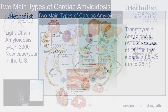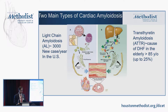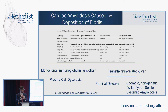Looking first at cardiac amyloidosis, there are two main types. One is light chain amyloidosis — a disease produced in the bone marrow — causing light chains to be misfolded, with fibrils deposited in the heart and other places. The other is transthyretin amyloidosis, called TTR or ATTR, produced in the liver as a tetramer that dissolves into monomers and gets deposited as amyloid fibrils in the heart. One starts in the bone marrow; the other starts in the liver.